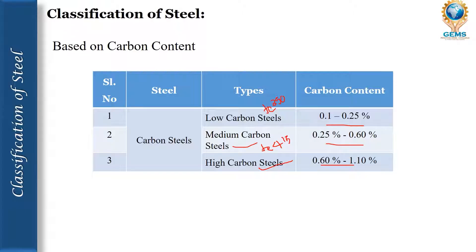As the carbon content increases, the yield strength, ultimate tensile strength, and hardness of steel increase, whereas ductility and toughness decrease. So if we are going to use steel in structural members, the hardness must be lesser to improve weldability. Ductility and toughness are very important for structural steel subjected to dynamic and impact loading.